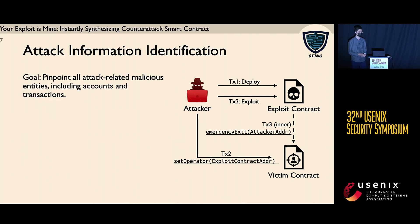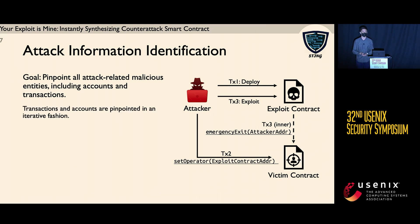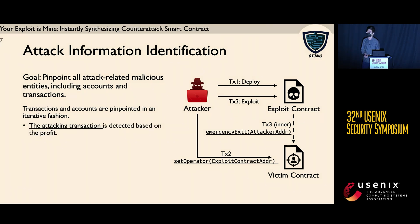The first phase of our technique is attack information identification. The goal is to pinpoint all attack-related malicious entities, including accounts and transactions. In this case, we have two malicious accounts — the attacker and the exploit contract — and three related transactions. The overall process is performed in an iterative fashion: with newly detected transactions, we try to detect more related accounts and vice versa. At the very beginning, the attacking transaction is detected based on profit. So in this case, the third transaction is pinpointed as the attacking transaction because it generates a huge amount of profit to the attacker.